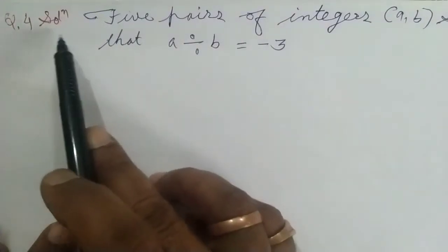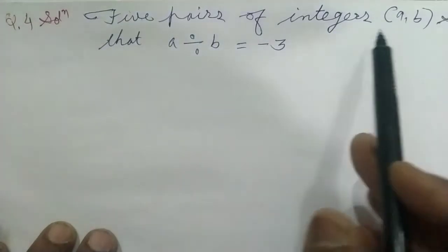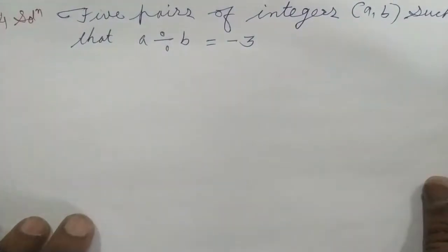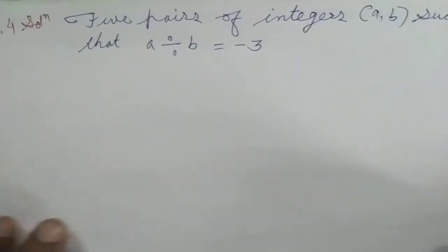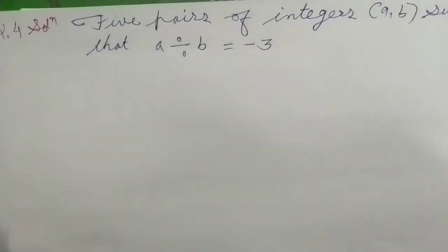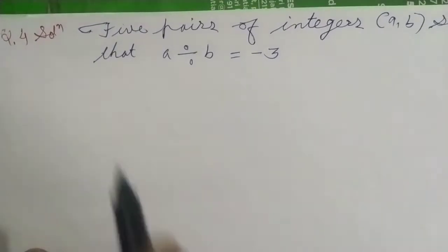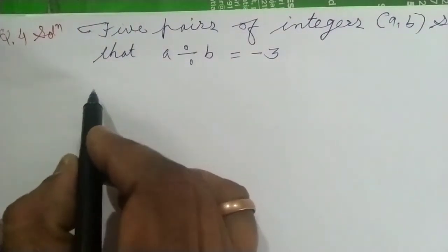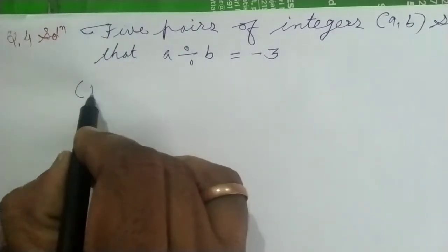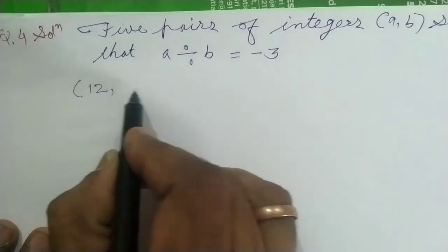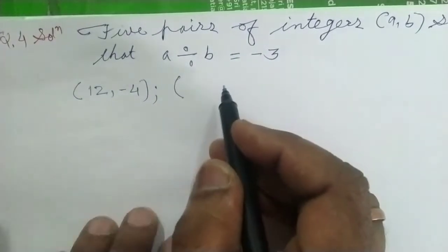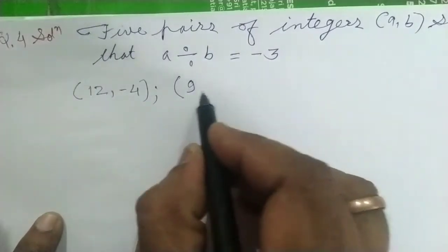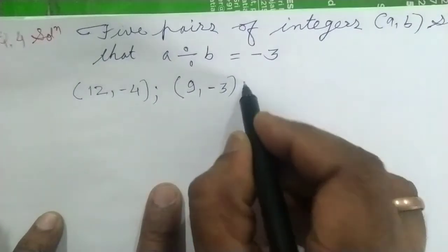यहाँ पर हम लिख देते हैं — Question 4 का solution: 5 pairs of integers such that A ÷ B = −3। पहला pair: A = 12, B = −4 — 12 को minus 4 से divide करो तो minus 3 आ जाए। दूसरा pair: A = 9, B = −3 — 9 को minus 3 से divide करो तो minus 3 आएगा।